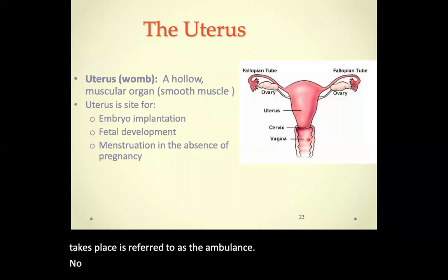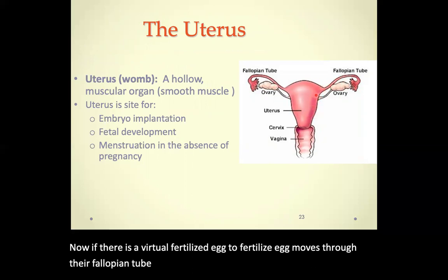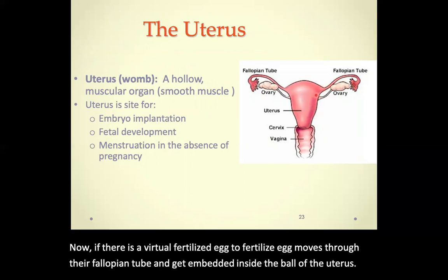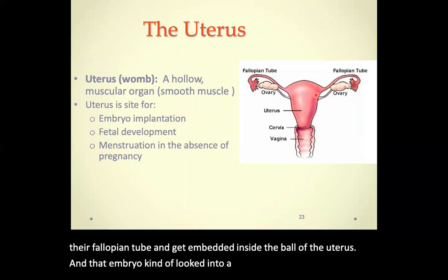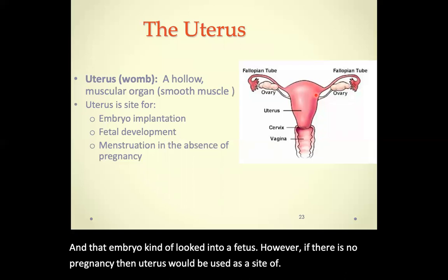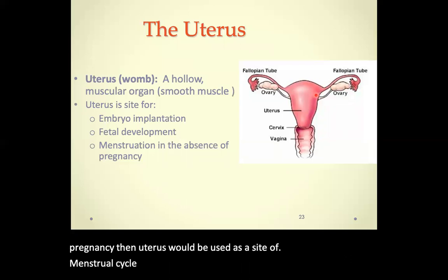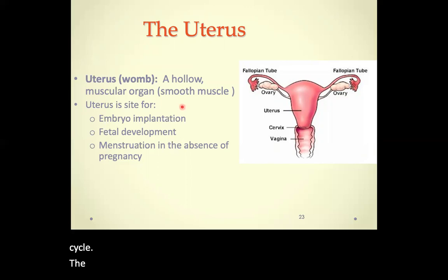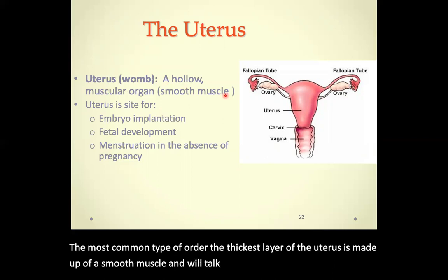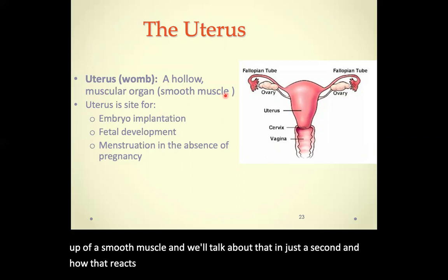If there is a fertilized egg, it moves through the fallopian tube and gets embedded inside the wall of the uterus, where the embryo can develop into a fetus. However, if there is no pregnancy, the uterus serves as the site for menstruation. The thickest layer of the uterus is made up of smooth muscle, which we'll discuss in relation to the hormone oxytocin.